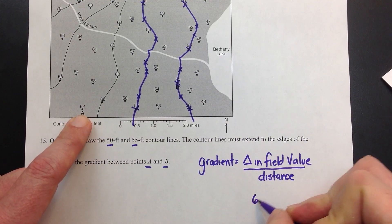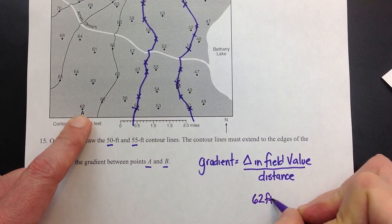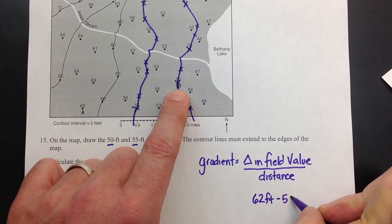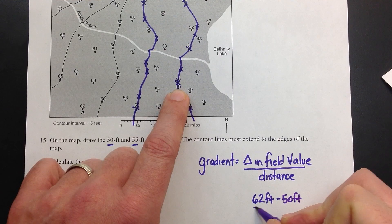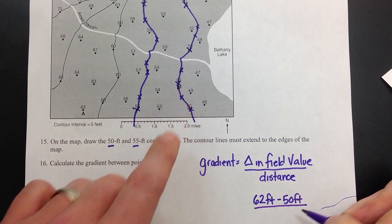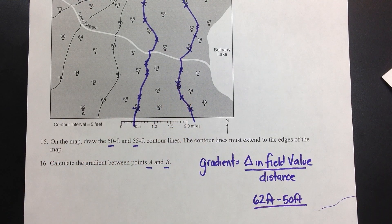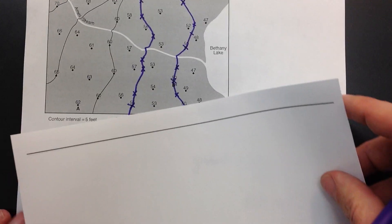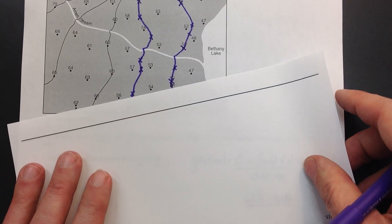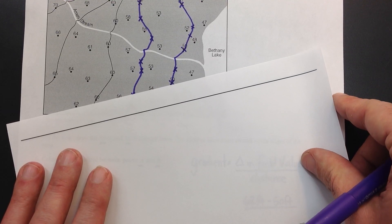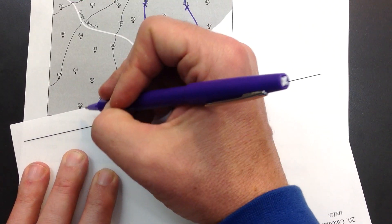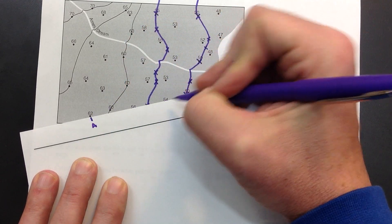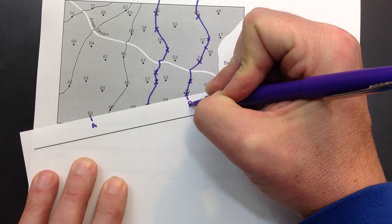So 62 feet, you always put the bigger value first, minus B, which is 50 feet, divided by the distance. So what we do here is we take a scrap piece of paper and I'm going to put my paper on top of A and B. I'm going to mark off A and I'm going to mark off B.